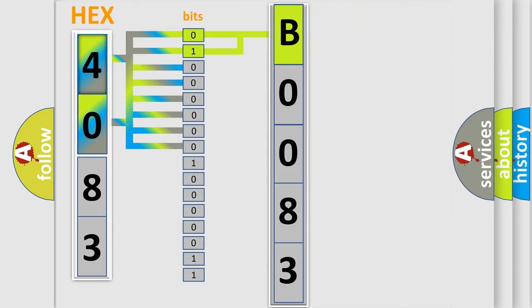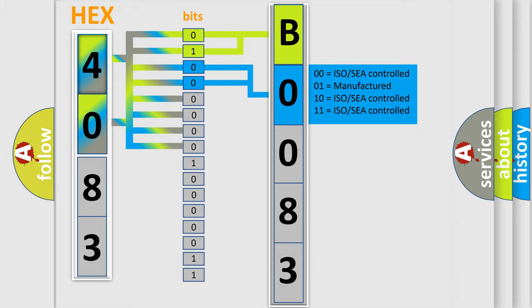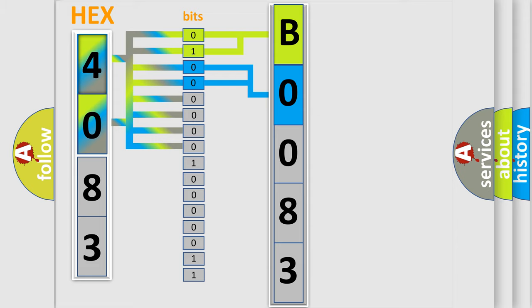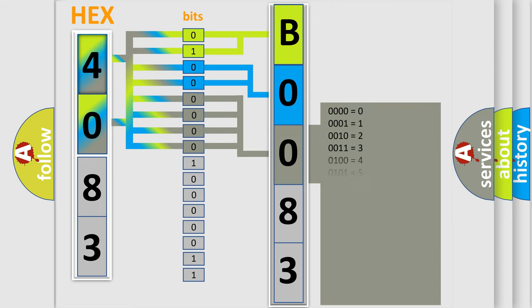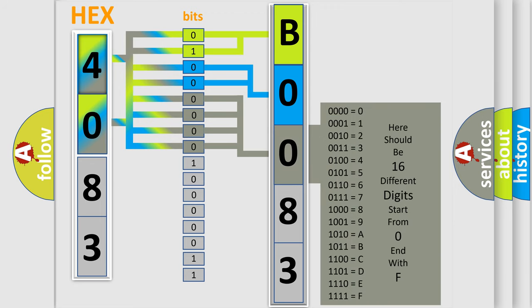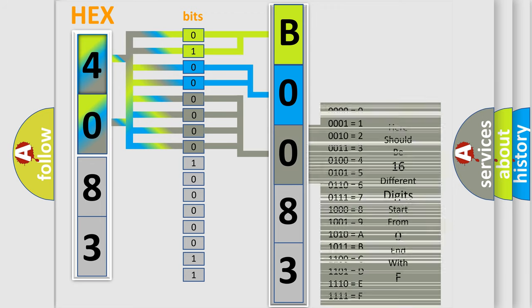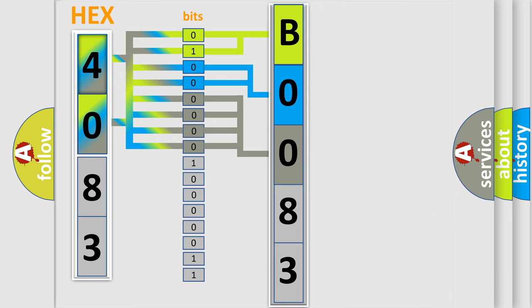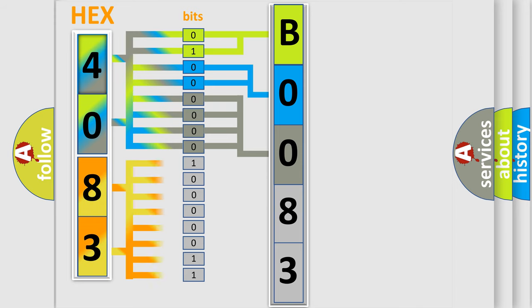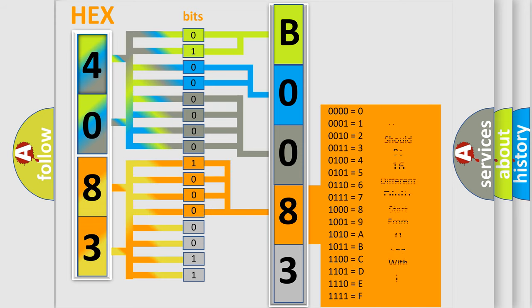The next two bits determine the second character. The last four bits of the first byte define the third character of the code. The second byte is composed of a combination of eight bits. The first four bits determine the fourth character of the code, and the combination of the last four bits defines the fifth character.